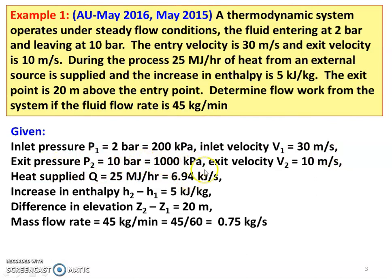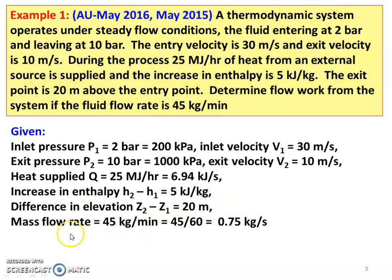Heat supply: 25 megajoules per hour. We have to convert into kilojoules per second: 25,000 divided by 3,600 equals 6.94 kilojoules per second. Increase in enthalpy H2 minus H1 is 5 kilojoules per kilogram. Difference in elevation Z2 minus Z1: exit is 20 meters above the entry point, so Z2 minus Z1 equals 20 meters. Mass flow rate is 45 kilograms per minute, which is 45 divided by 60 equals 0.75 kilograms per second.